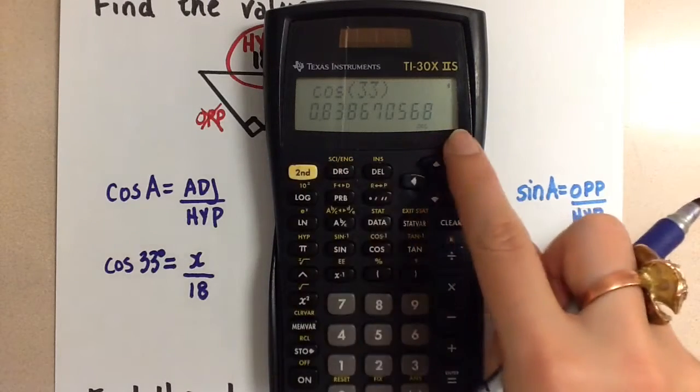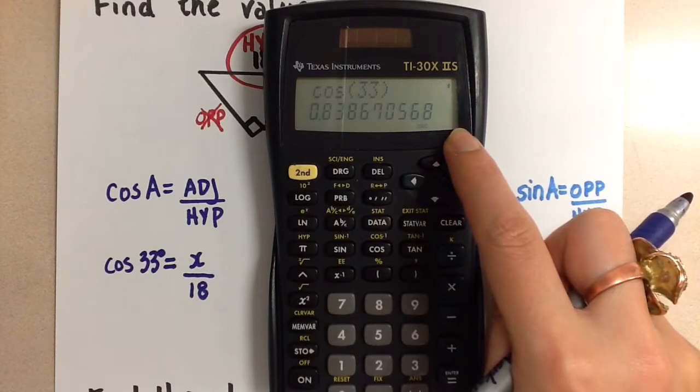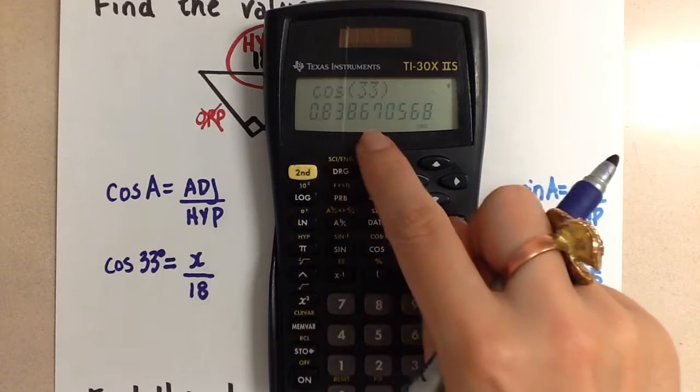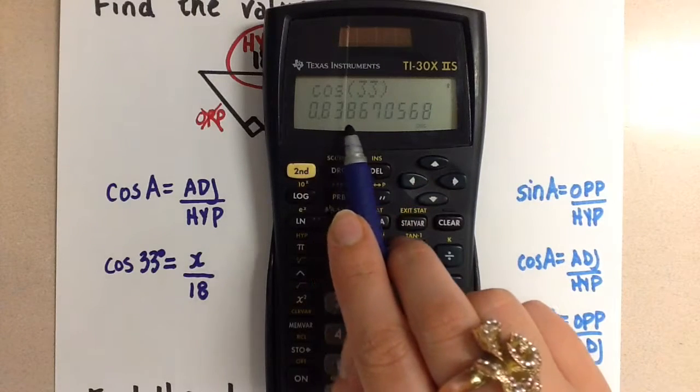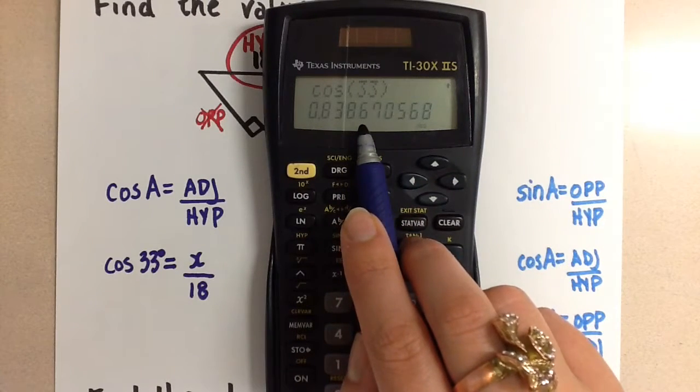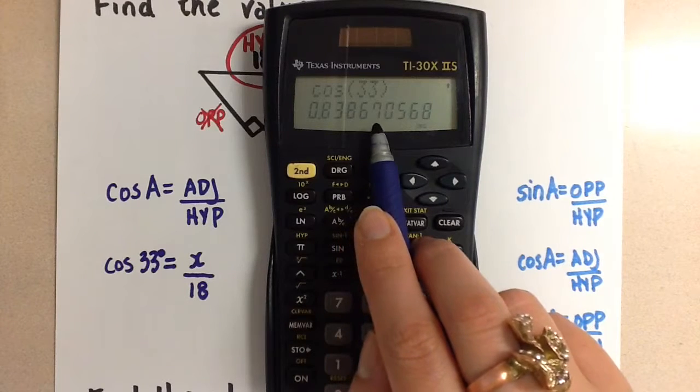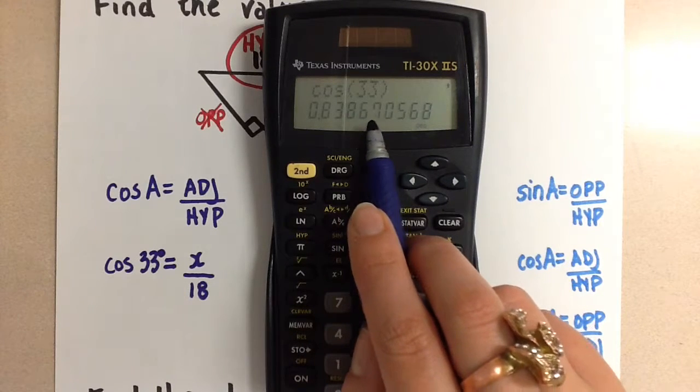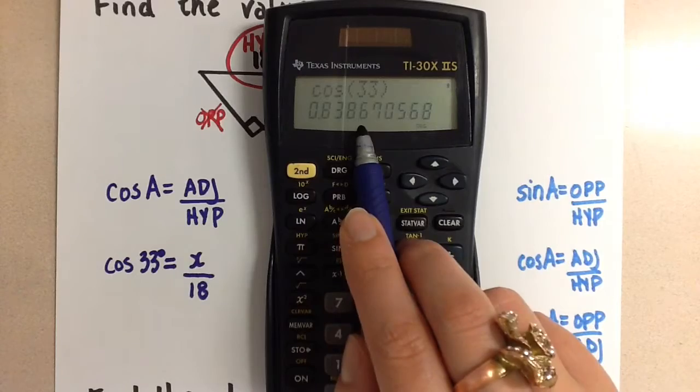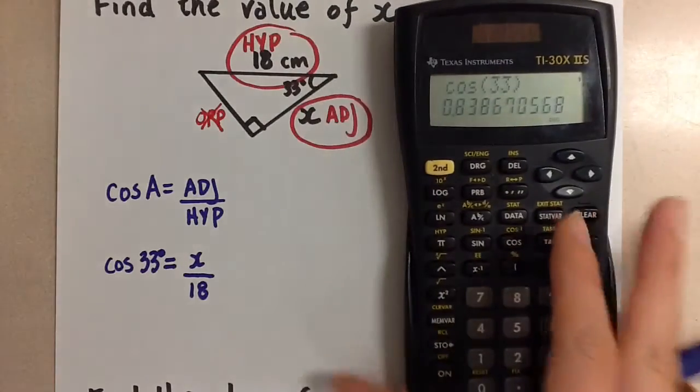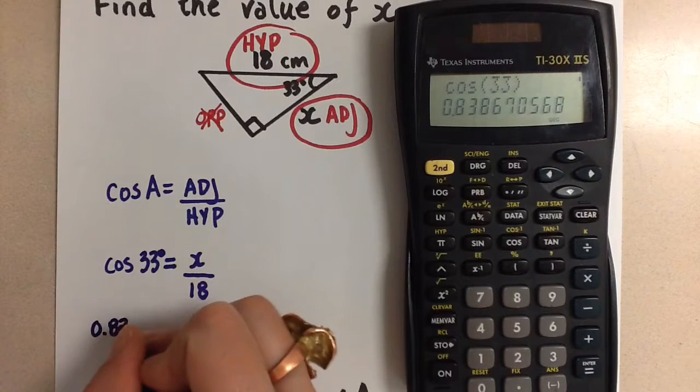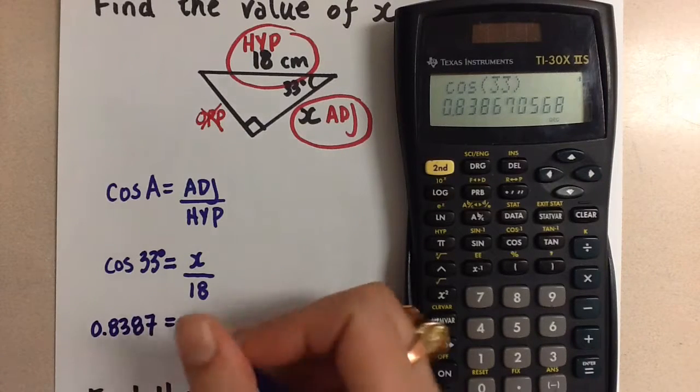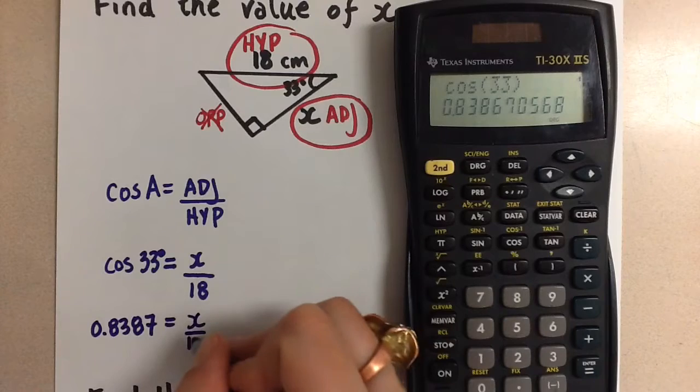And here we get this number. Now for accuracy, I always say that we should keep four decimal places here. That means we're going to do one, two, three, four. Look at the six. That's the one that we're rounding. So we look next to the six. The seven pushes the six up to a seven. So when we write down this number, we write down 0.8387 equals x over 18.